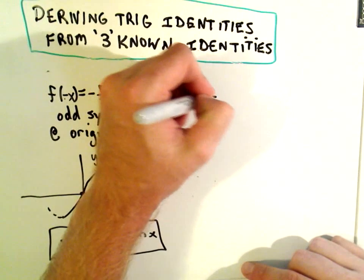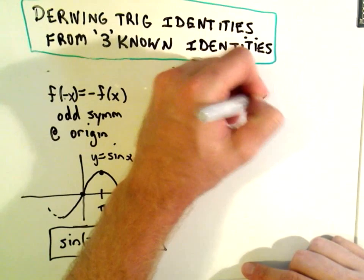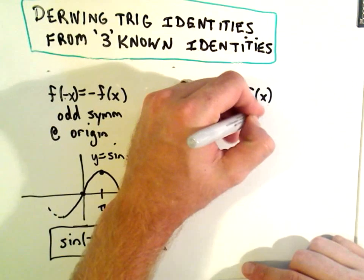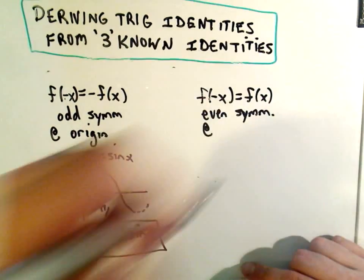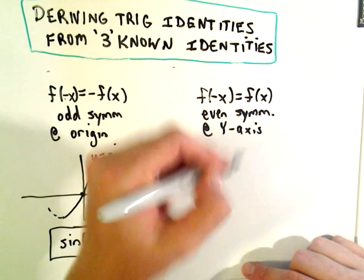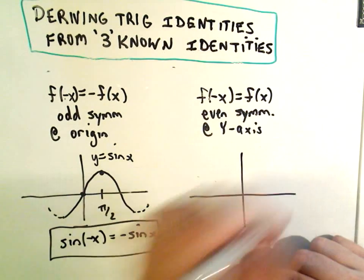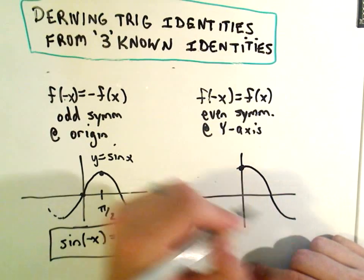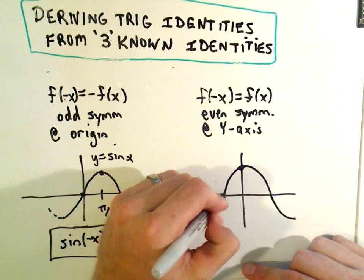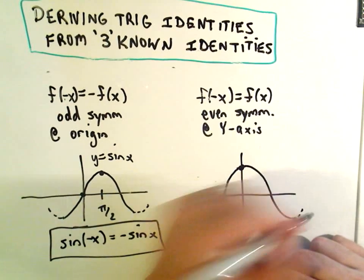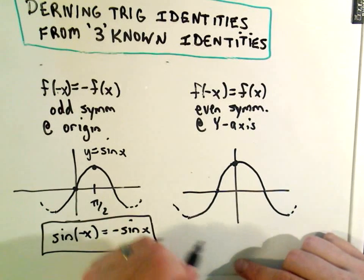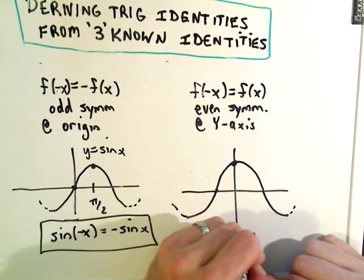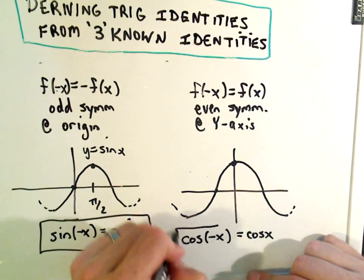If f of negative x equals just plain old f of x, it says it's got what we call even symmetry, and that turns out to be symmetric about the y-axis. And if you think about the graph of cosine, cosine starts at one and then it comes down—it's just a shift of sine. Well, cosine has the symmetry about the y-axis. So another trig identity is cosine of negative x is just going to equal plain old cosine of x.